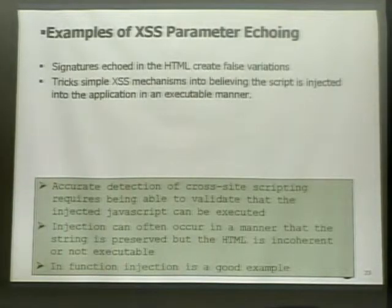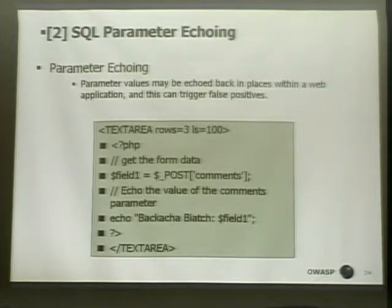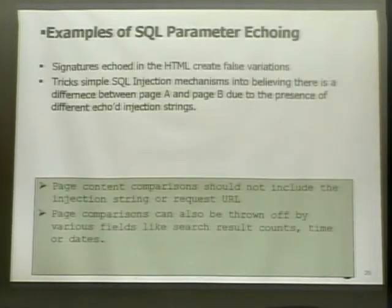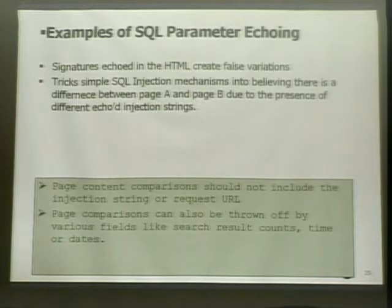Continuing on — the next one is SQL parameter echoing. It's the same kind of example as cross-site scripting but with SQL injection. We just put error messages inside a text area, and the scanner would see those error messages and trigger a finding — saying it got an error message — and that was enough.